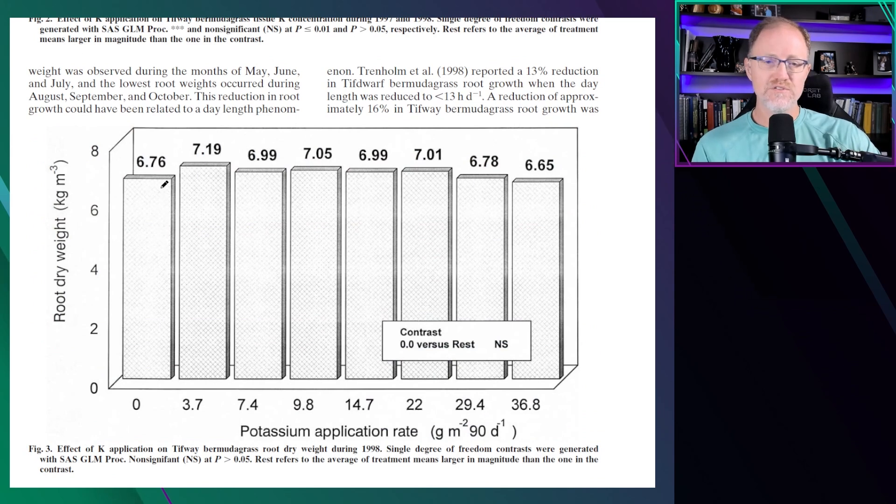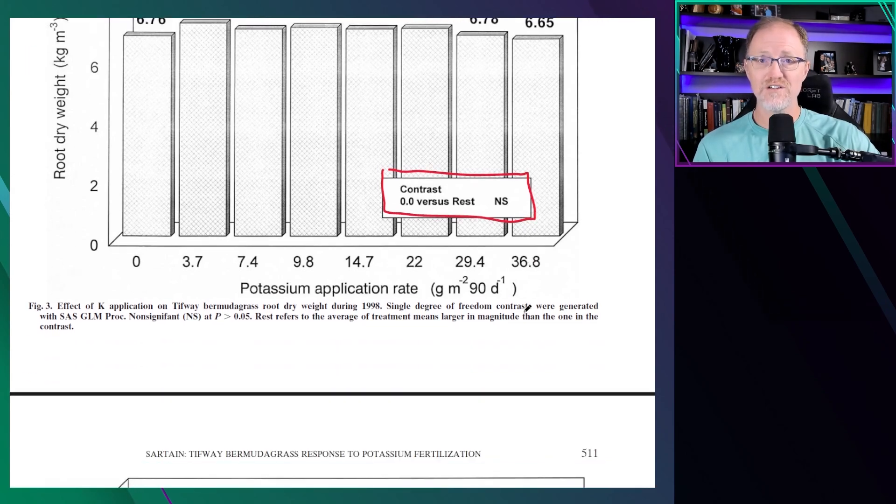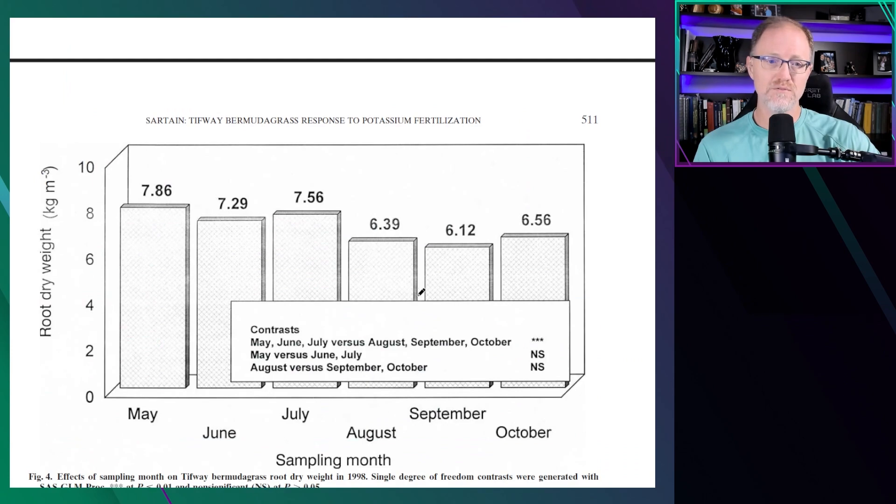We go to root weight. There were no differences in root weight even compared to the non-treated potassium. All of these were the same from zero all the way up to the highest amount of potassium at 7.5 pounds per year. There's no differences in root weight even from turfgrass grown in very low potassium soils.